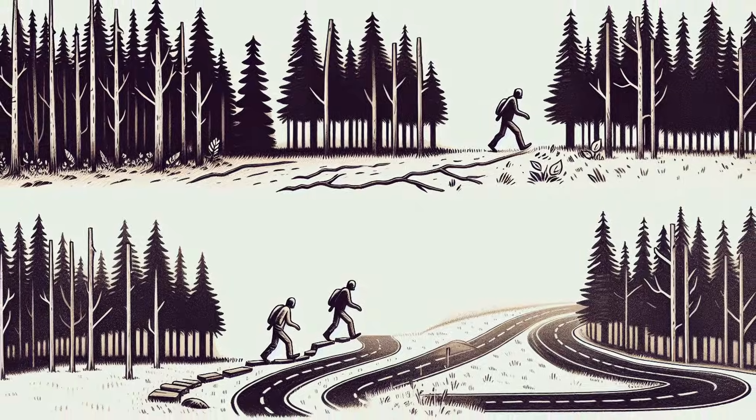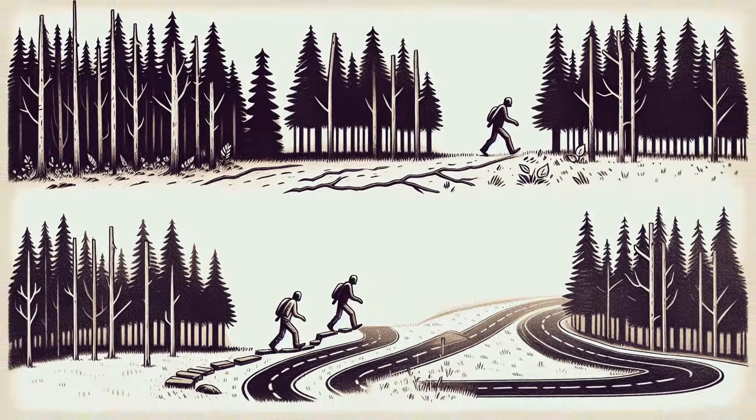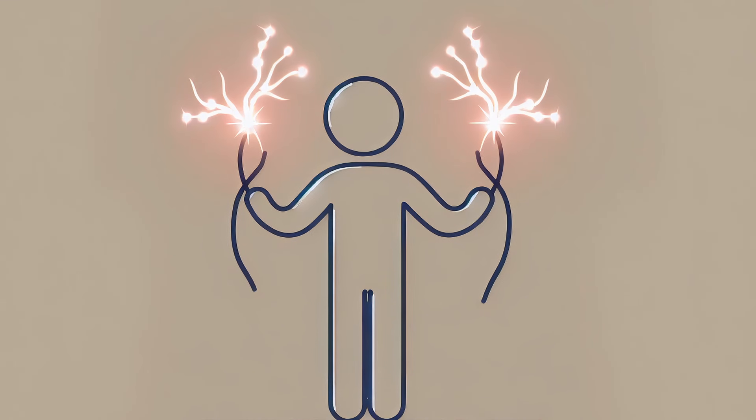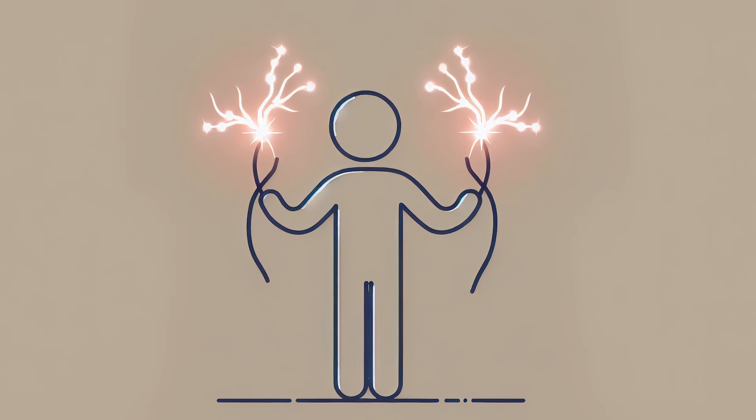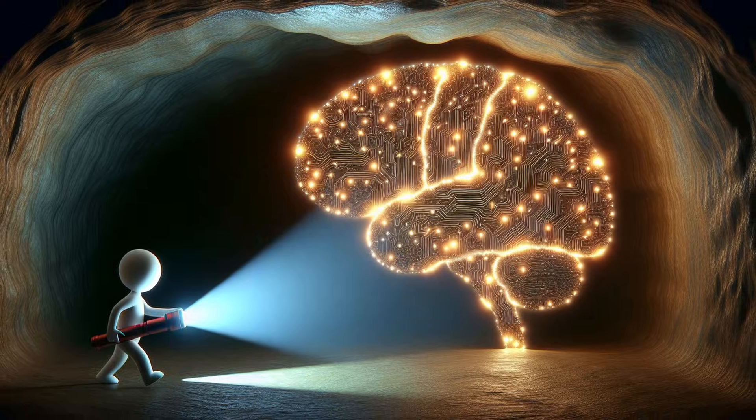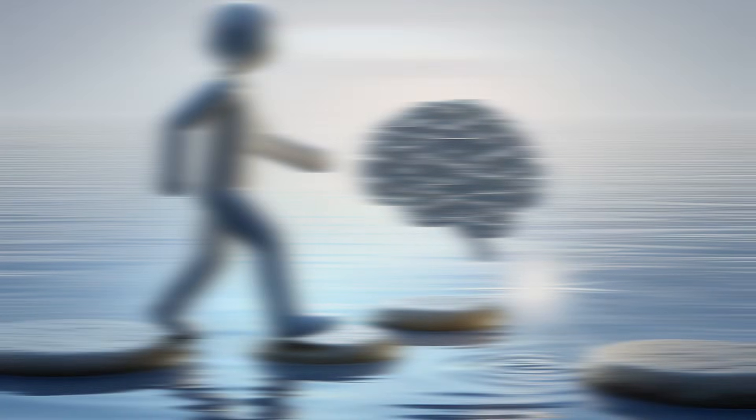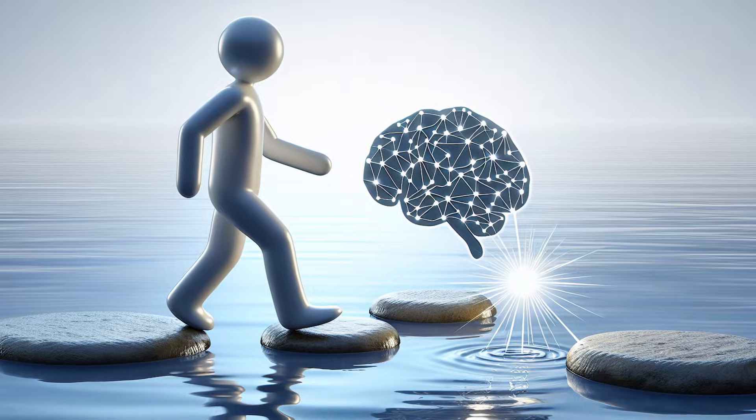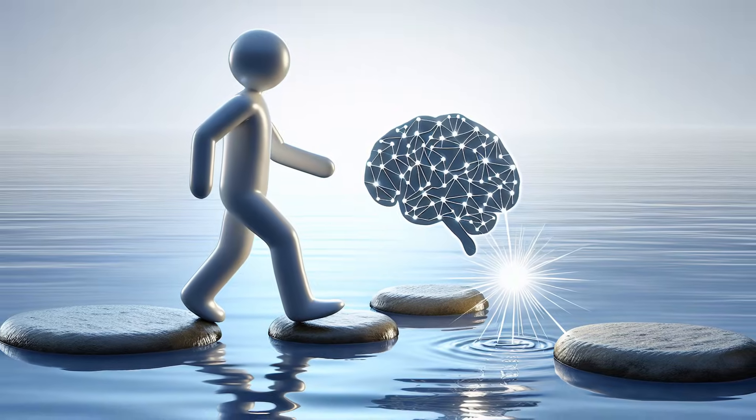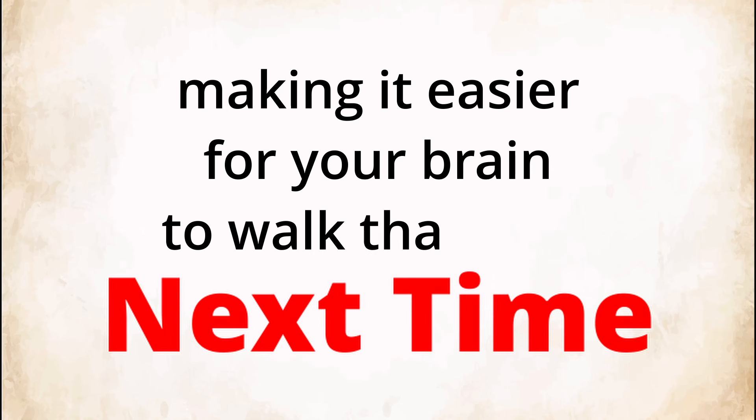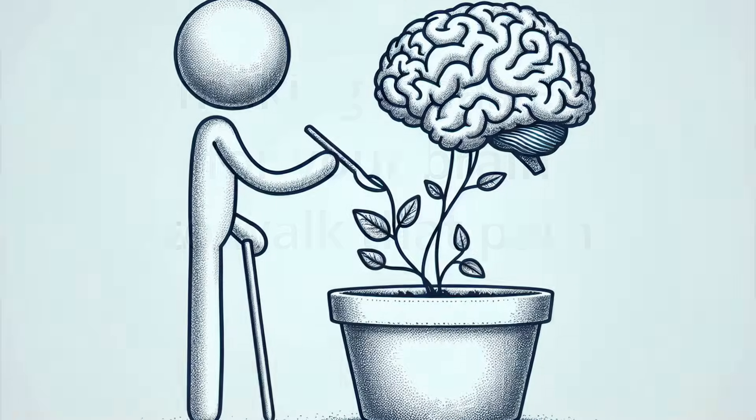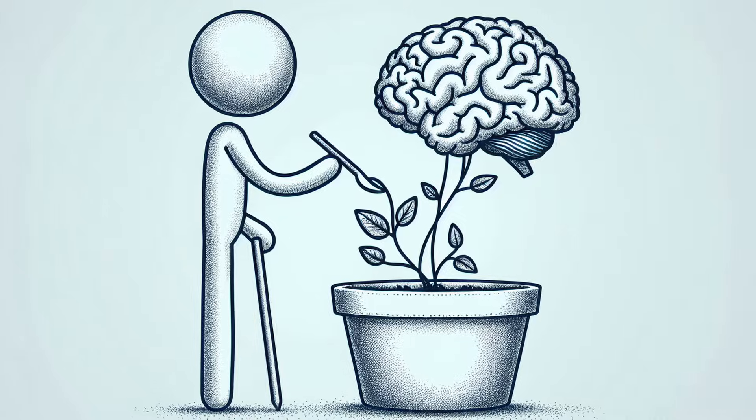Meanwhile, the paths you don't use slowly fade, becoming overgrown. Scientists summarize this with a simple phrase: neurons that fire together, wire together. When you practice something, whether it's a physical skill like playing guitar or a mental habit like gratitude, your neurons are firing in a pattern. Each repetition strengthens the connection, making it easier for your brain to travel that path the next time. What makes neuroplasticity so powerful is that